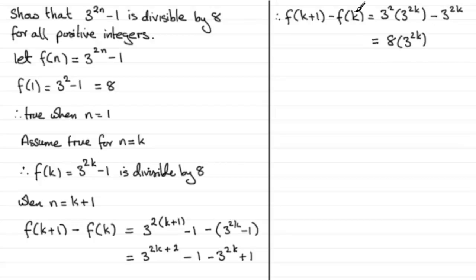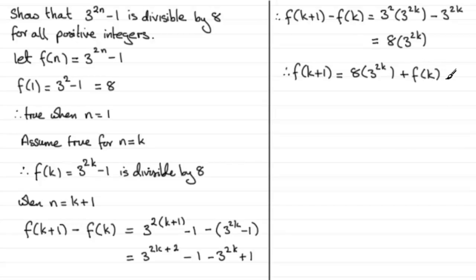At this stage we always add f(k) to both sides, leaving us with f(k+1) equals 8 multiplied by 3 to the power 2k, plus f(k). We can see that f(k+1) must be divisible by 8 because we have two terms here. The term f(k) is divisible by 8 — we made that assumption. And this term is divisible by 8 because 3 to the power 2k is an integer multiplied by 8. We've now got both terms divisible by 8, so f(k+1) must be divisible by 8.